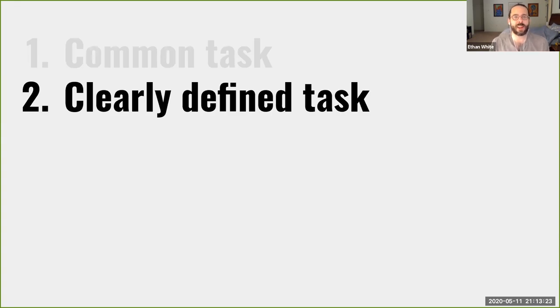Once you've got a common task, it's important to provide a very precise definition of the task that you want participants to accomplish. This includes detailed descriptions of the input data, the types of predictions to be made, the precise format predictions need to be provided in, and details of exactly how the predictions will be evaluated. And in our experience, doing this well is surprisingly difficult for even moderately complicated tasks, and there's always been a need for further clarification once the competition has been launched.